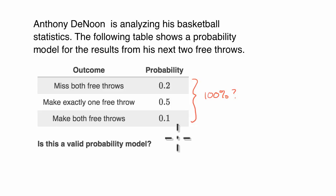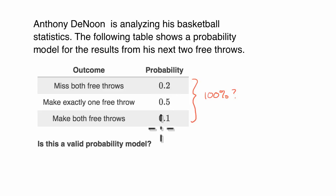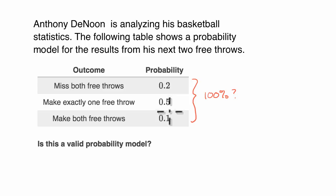Also, none of the probabilities can be negative values — you could have a scenario with 0% probability, but not negative. All of these look like positive probabilities, so we meet that second test: all probabilities are non-negative. But do they add up to 100%? If we add 0.2 and 0.5, that is 0.7, plus 0.1, they add up to 0.8.